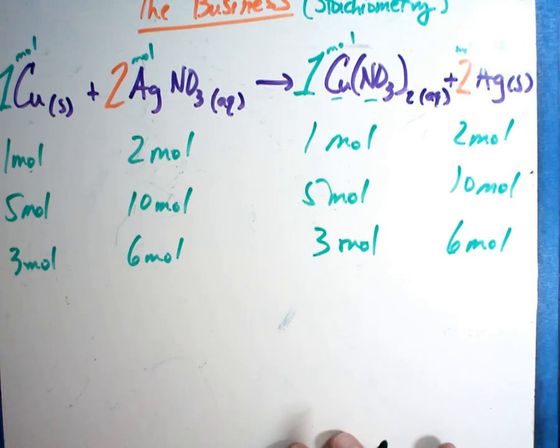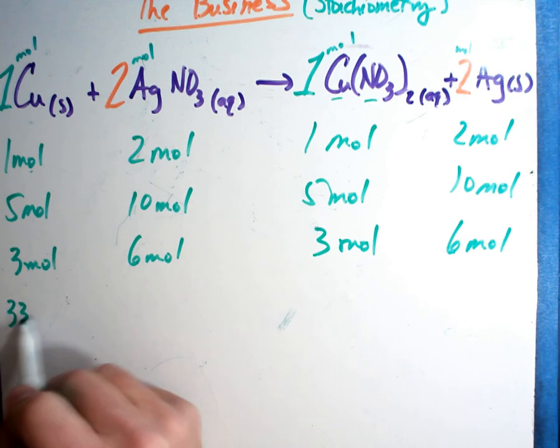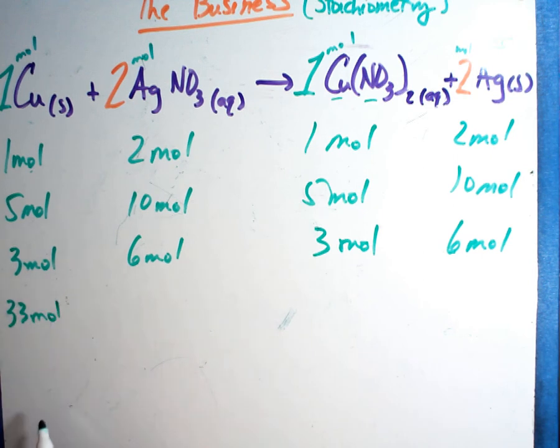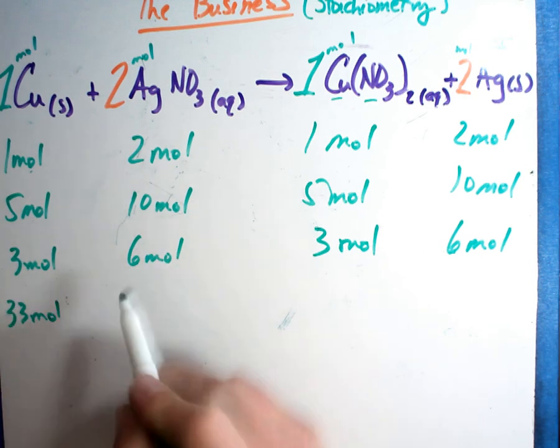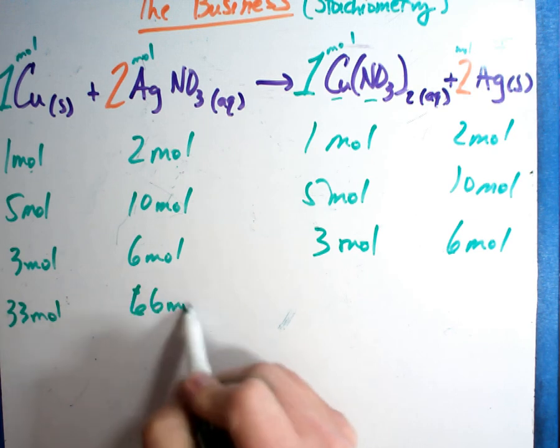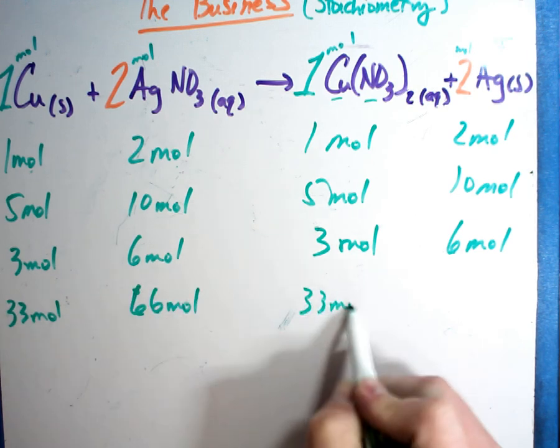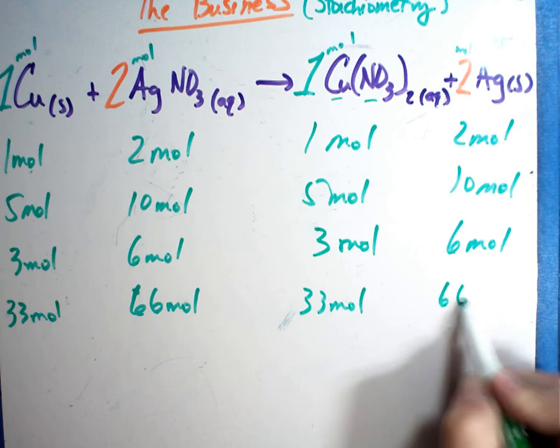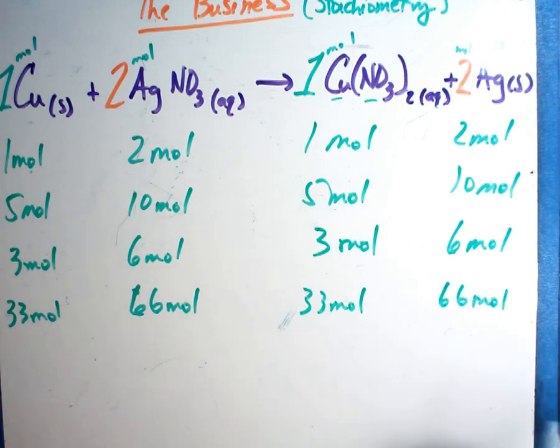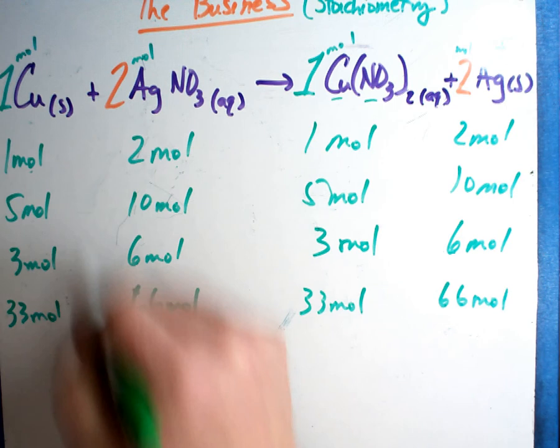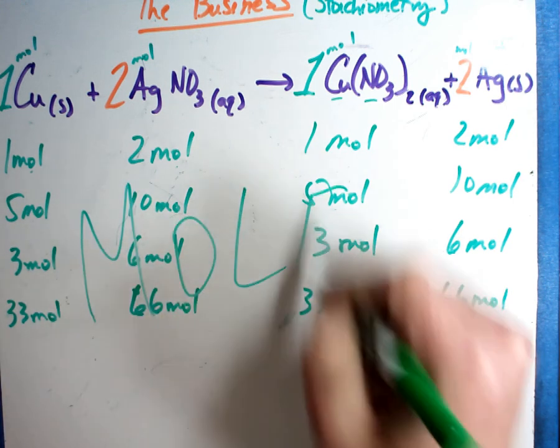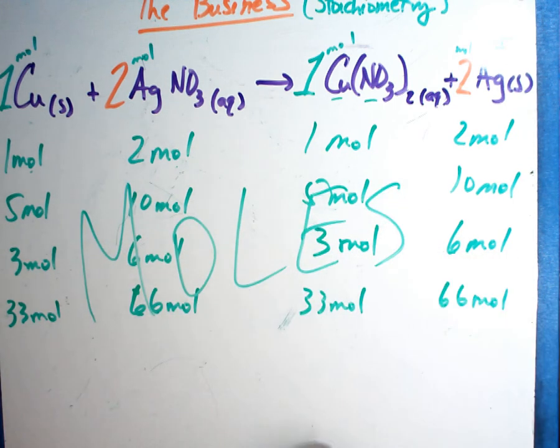So, what happens if I had one like this? I have 33 moles. Well, 33 divided by one is a change of 33. So, this is 66 moles. This is 33 moles. And this is 66 moles. Everybody's in moles. So, here's the deal. In order to work this math, you always have to be in moles. When you're in moles, you can calculate anything.